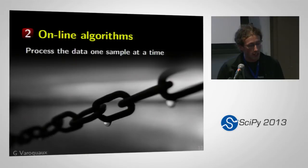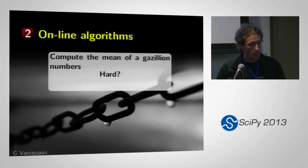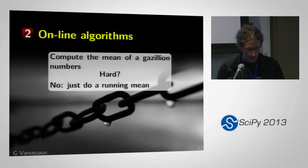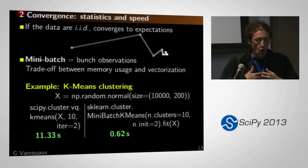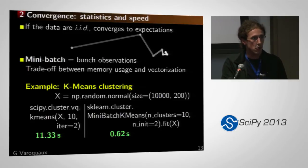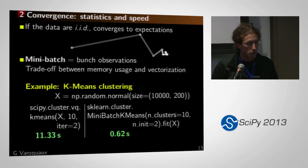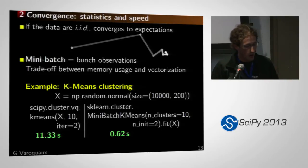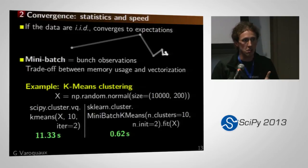Online algorithms: the idea is to process the data one sample at a time. Suppose you have to compute the mean of a gazillion numbers — you just do a running mean. You can control your data access. If you're drawing your data in an IID way, they converge to expectations of the distributions you're interested in. One trick is to use mini-batches — bunches of samples — to exploit vectorization. It's a trade-off between blowing up your memory and vectorizing. For example, mini-batch clustering compared to the SciPy clustering: SciPy takes 11 seconds; scikit-learn mini-batch takes 0.6 seconds. It's not as good, but it's pretty close.